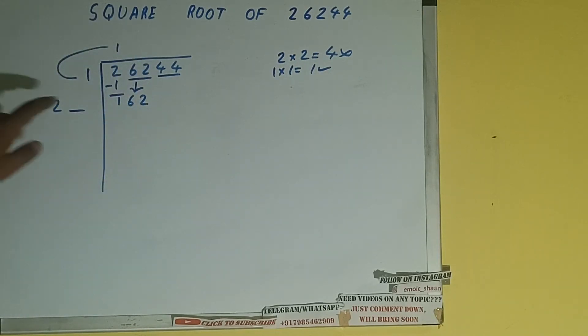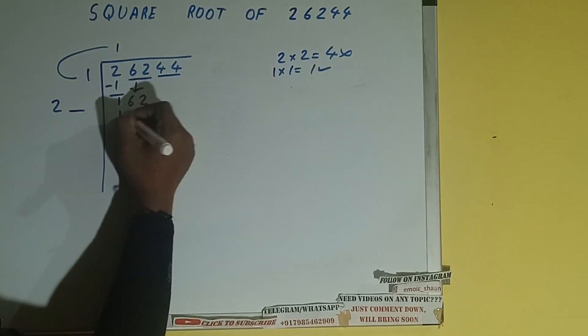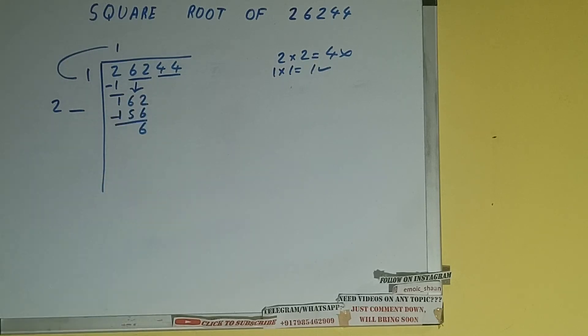Bring the next pair down and it will be 162. Now whatever number we write here, we need to write here also. So if we write 6 here and 6 here, we'll be getting 156, which is good to take.